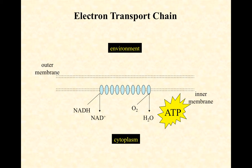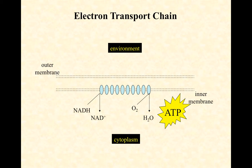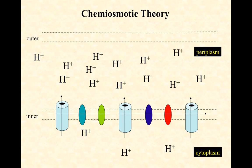NADH and FADH2 donate their electrons to these carrier molecules, and they get transferred from one to the next to the next. Ultimately, the very last one in the sequence will hand those electrons off to oxygen in the cytoplasm, reducing oxygen to water. And somehow ATP is produced — but it's not magic. It's something we call chemiosmosis, or chemiosmotic theory.